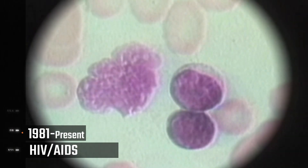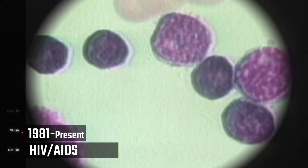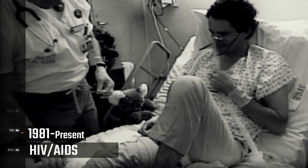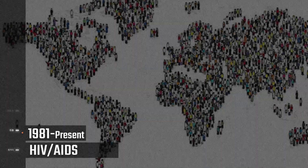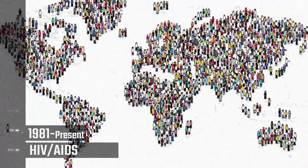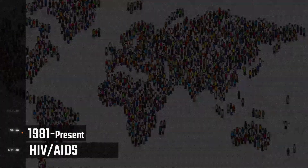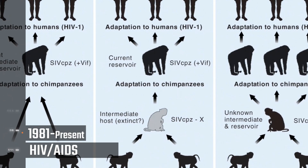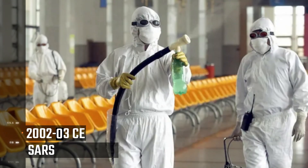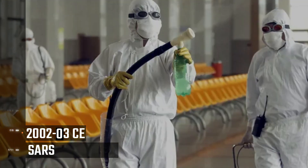HIV/AIDS, 1981 to present. HIV, the virus that causes AIDS (acquired immunodeficiency syndrome), is one of the world's most serious health and development challenges. As of 2018, approximately 37.9 million people were infected with HIV, and about 25 to 35 million people have died of AIDS-related causes since the beginning of the epidemic. Approximately 75 million people have become infected with HIV in total, which originated from chimpanzees.